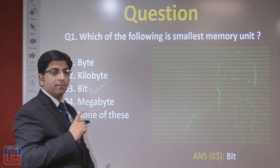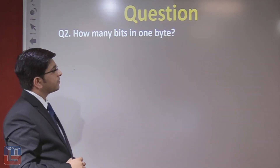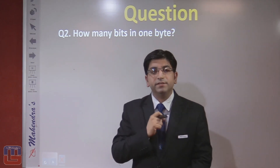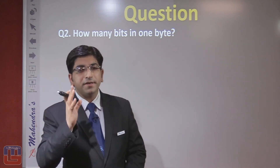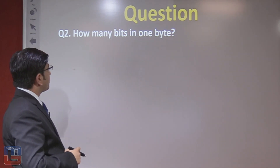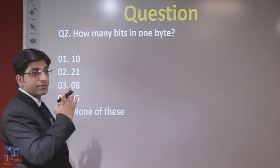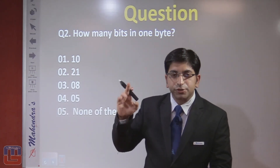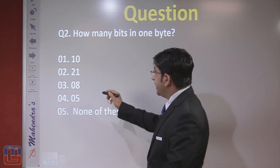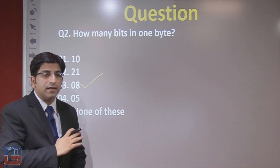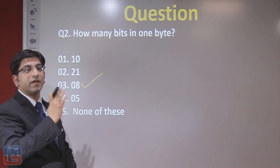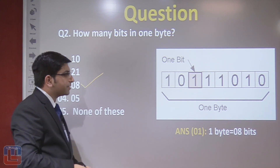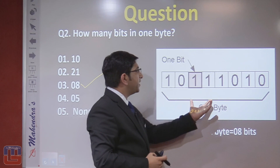The right answer is bit. Next, question number two: how many bits are in one byte? The options are 10, 21, 8, 5, or none of these. One byte equals 8 bits, so the answer is option number 3. The combination of 8 bits is called 1 byte.